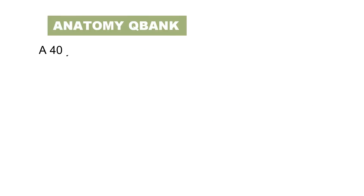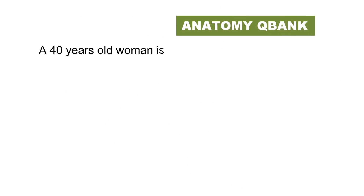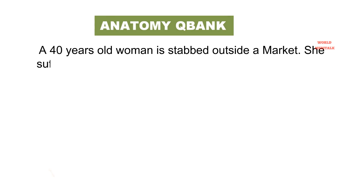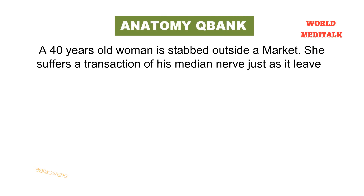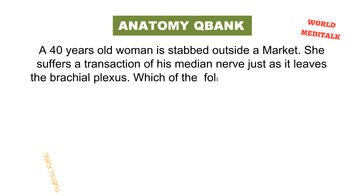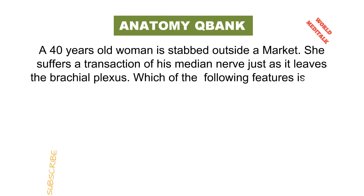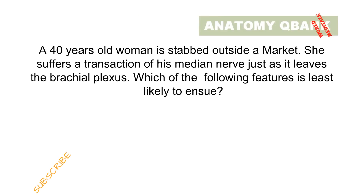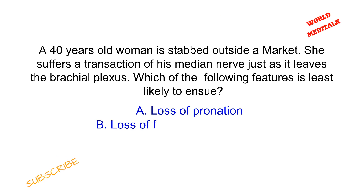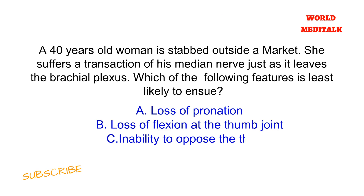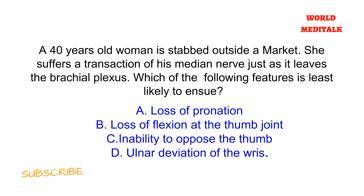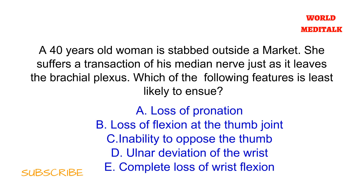A 40-year-old woman is stabbed outside a market. She suffers a transection of her median nerve just as it leaves the brachial plexus. Which of the following features is least likely to ensue? Loss of pronation. Loss of flexion at the thumb joint. Inability to oppose the thumb. Ulnar deviation of the wrist. Complete loss of wrist flexion. Give a pause and try to think about the answer.